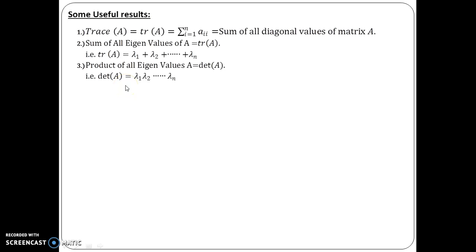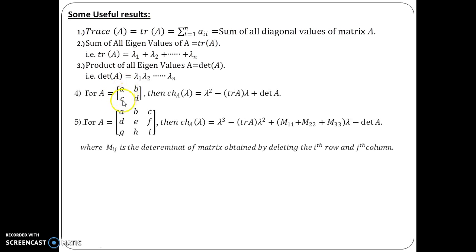Now, further, there are these two important formulas. Just check them out. If your matrix A is a 2×2 matrix, then the characteristic polynomial is given by this following formula: λ² - tr(A)λ + det(A).